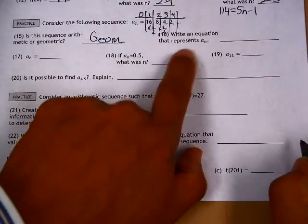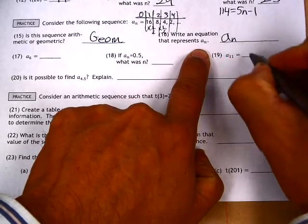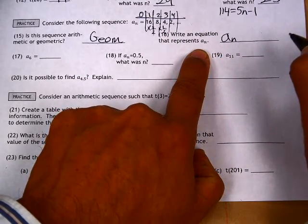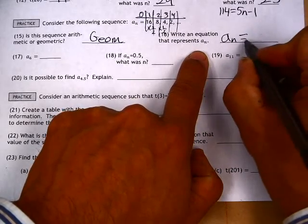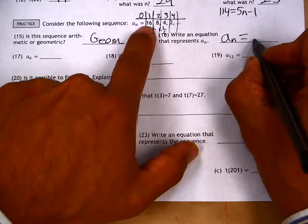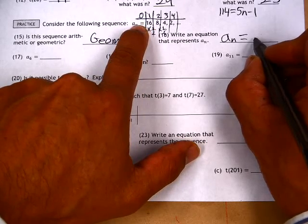Write an equation that represents a of n. a of n, normally we would write that as t of n, or y equals. The initial value is what I need, so I need to go work backwards one more step, so that would be 32.